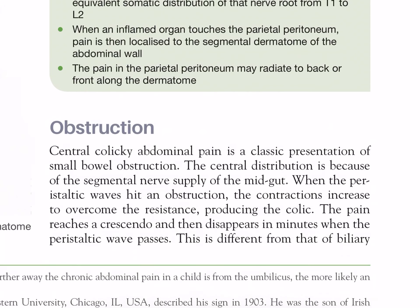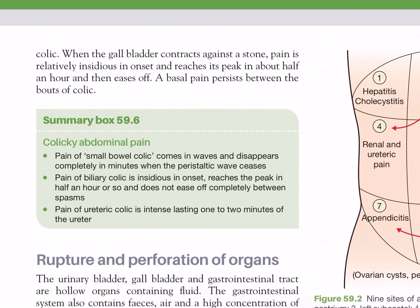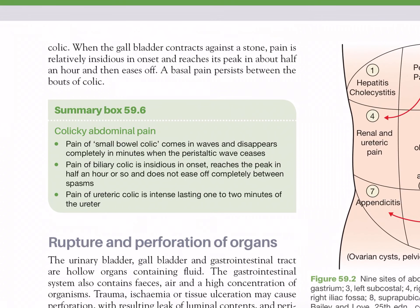Obstruction: central colicky abdominal pain is a classic presentation of small bowel obstruction. The central distribution is because of the segmental nerve supply of the midgut. When the peristaltic wave hits an obstruction, the contractions increase to overcome the resistance, producing the colic. The pain reaches a crescendo and then disappears in minutes when the peristaltic wave passes. This is different from biliary colic — when the gallbladder contracts against a stone, pain is relatively insidious in onset, reaches its peak in about half an hour, and then eases off. A basal pain persists between the bouts of colic.